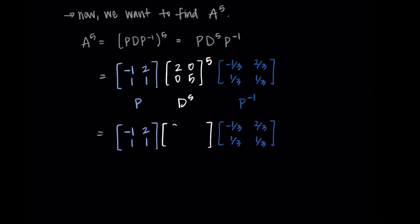I have P D to the fifth power P inverse. Computing D to the fifth power just means taking those diagonal elements and raising them to the fifth power, so I'm really just doing 2 to the fifth and 5 to the fifth. Using a calculator, I have computed what those are. I'm getting 32 and 3,125. Now I just have these three matrices being multiplied together.